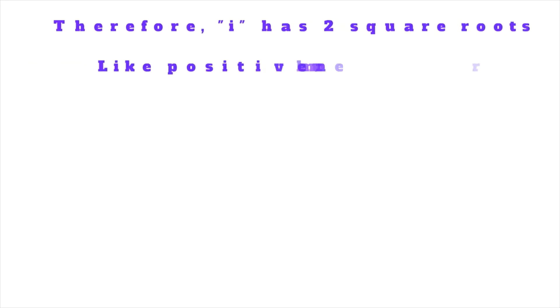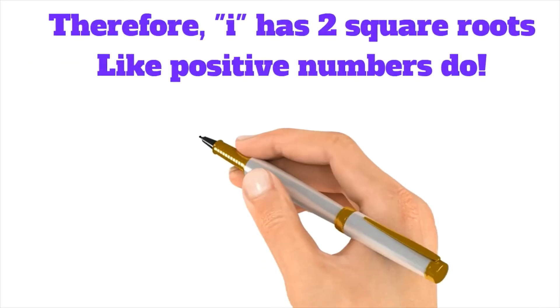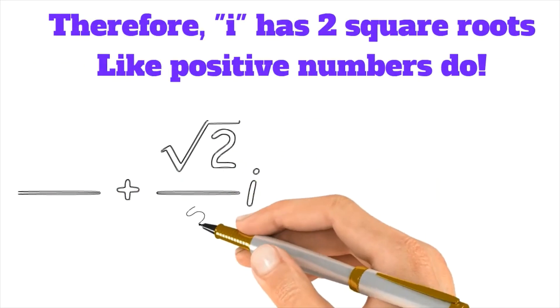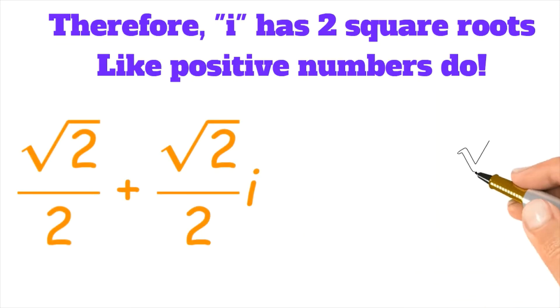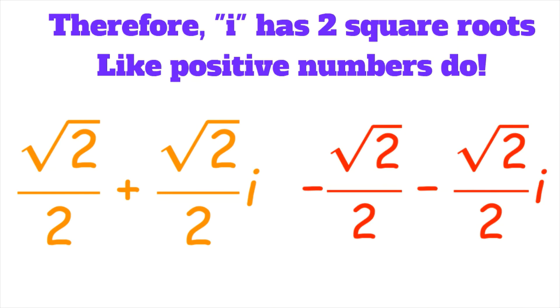Therefore, i has two square roots like most positive numbers do. The first one is √2/2 + (√2/2)i, and the second square root is -√2/2 - (√2/2)i.